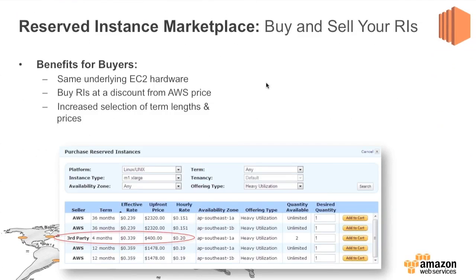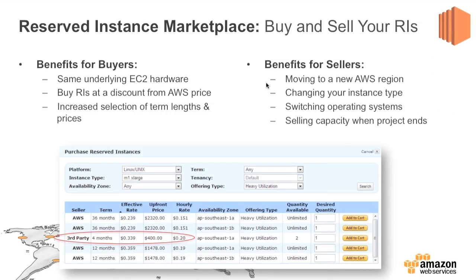We also have a reserved instance marketplace, which is an opportunity to buy instances. One important note: at the moment, you can only sell a reserved instance if you have a US bank account. But you can buy — for example, if you're running a short-term project and need an M1 extra large Linux server in Singapore, the tool will show third-party AWS customers selling RIs with, say, four months left on their commitment.